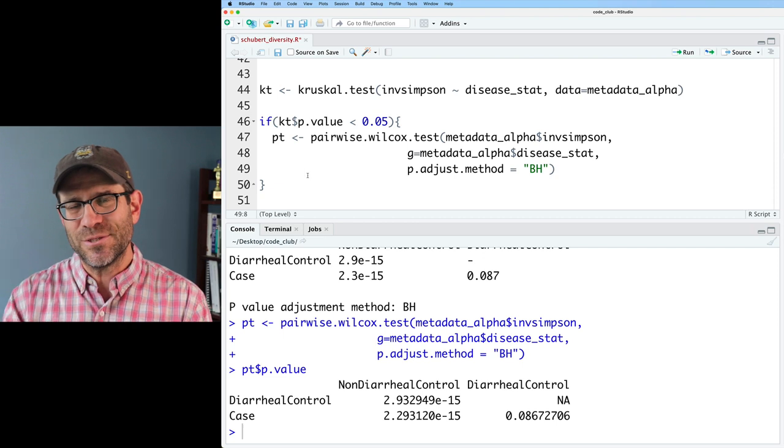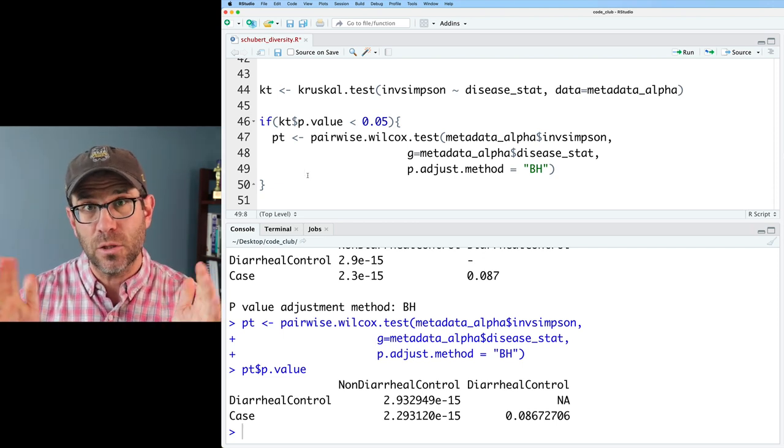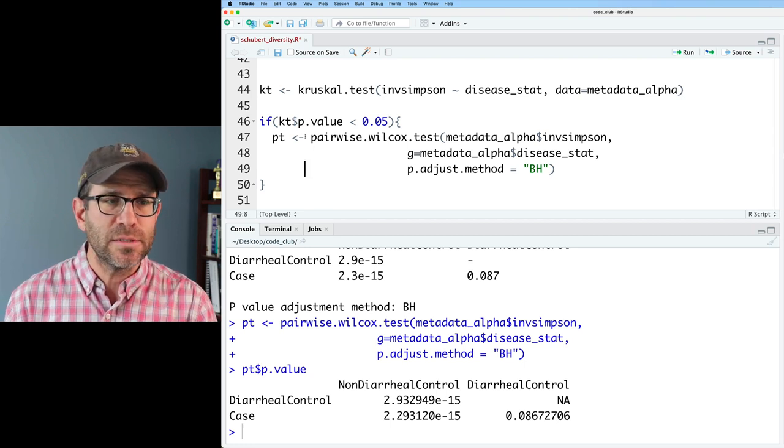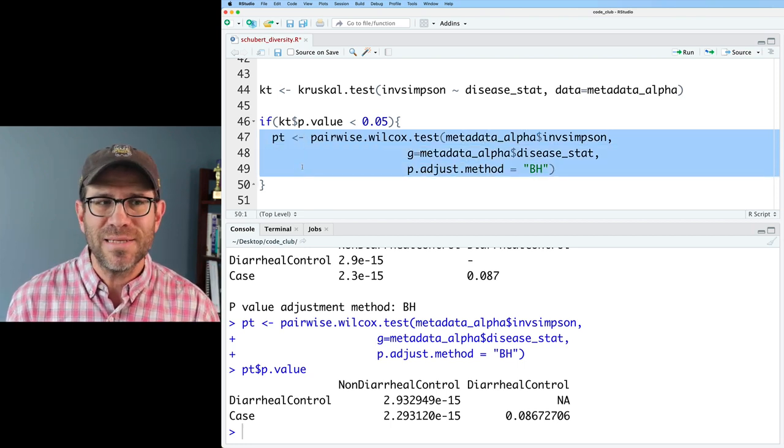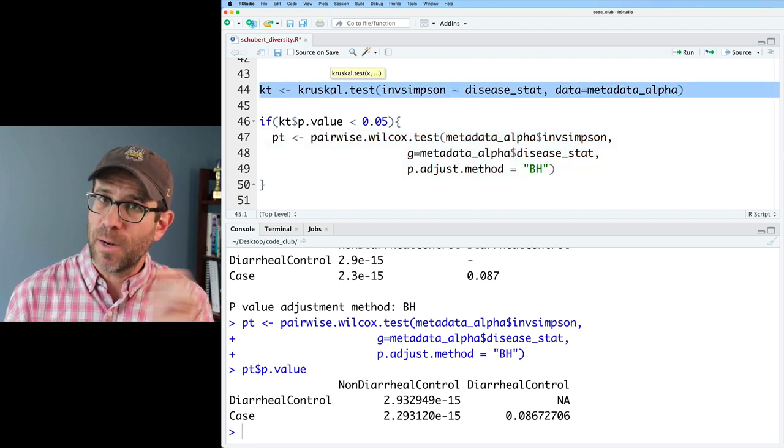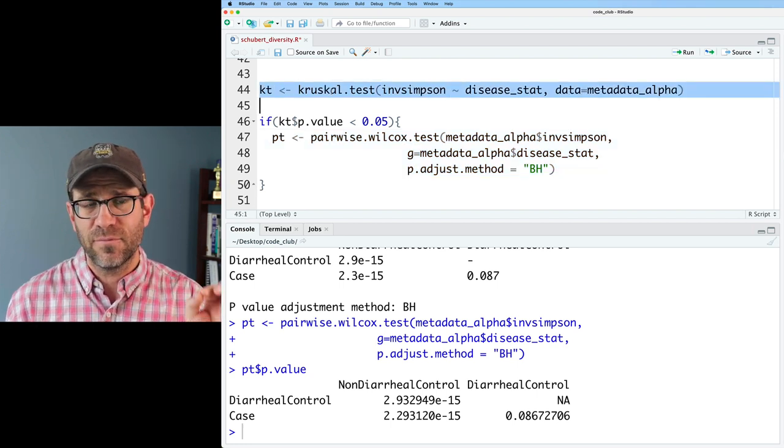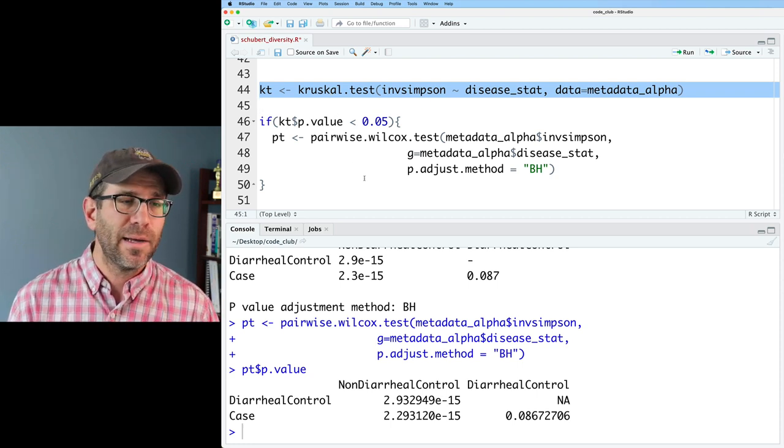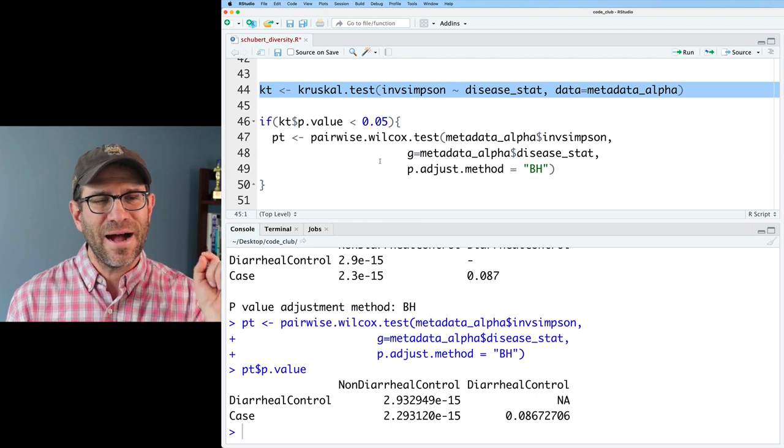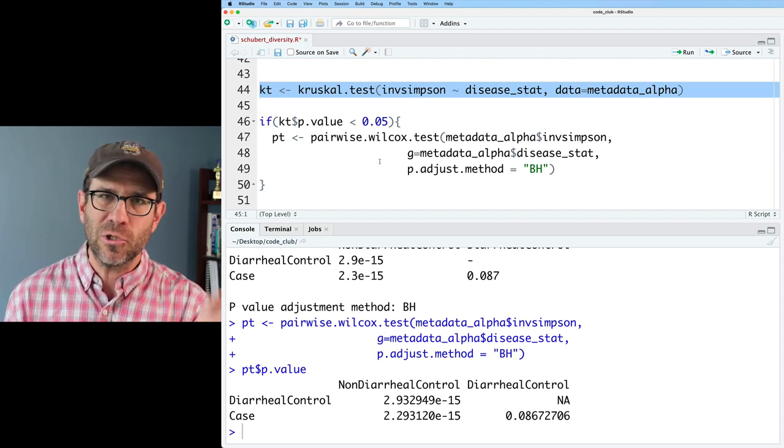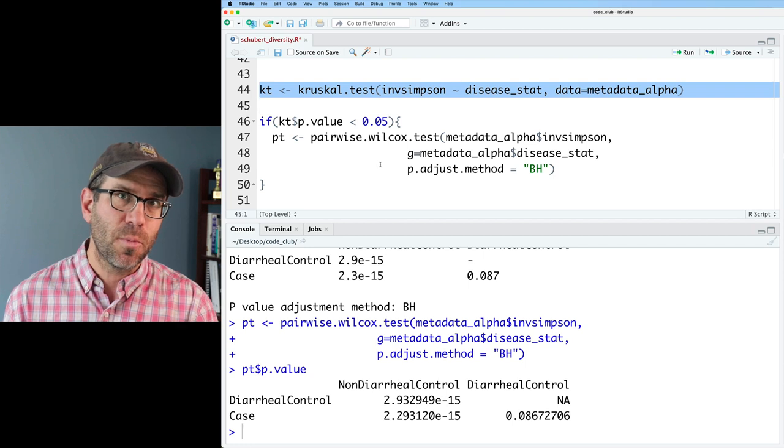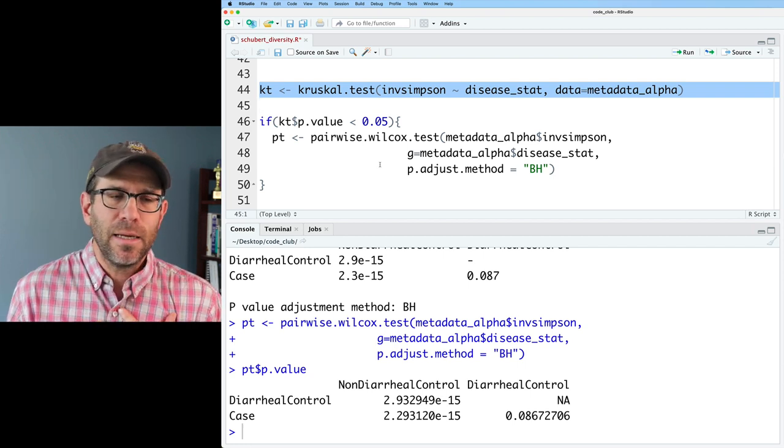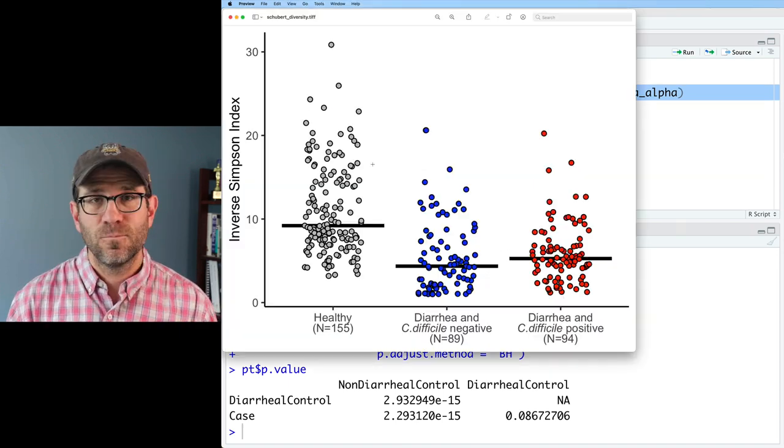An important thing to remember, though, is that we do not run this pairwise test unless this experiment-wide test, the Kruskal test, is significant. If the Kruskal test is not significant, then we do not go on to the next step. So that's a little bit of statistics that I'll drop on you. But again, talk to your local statisticians for more help on how to appropriately model the data. This is a very basic comparison that even I feel up to the challenge of looking at.